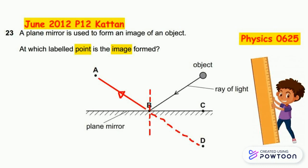To determine the position of the image exactly, you have to draw an extension for the reflected ray from point B to point D.